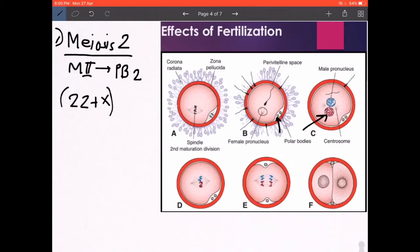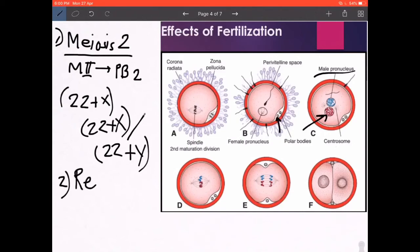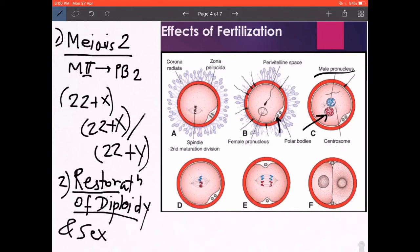At the same time, the head of the sperm that has entered starts swelling up and attains the same size of the female pronucleus, known as the male pronucleus. This could either be 22 plus X if it is an X bearing sperm, or 22 plus Y. The zygote could be a male or female zygote. After completion of meiosis 2, what happens is the restoration of diploidy. Now you've got 44 plus XX or 44 plus XY, and determination of sex depending on whether it was the X bearing or Y bearing sperm.